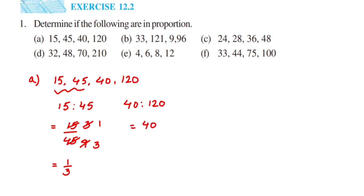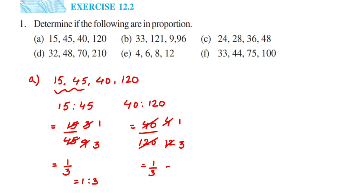For the second ratio, 40 by 120: cancel in the ten table — ten fours are 40, ten twelves are 120 — giving 4 and 12. Cancel in the four table — four ones are 4, four threes are 12 — so we get 1 by 3. Both ratios equal 1 is to 3, so they are equal. Yes, they are in proportion.